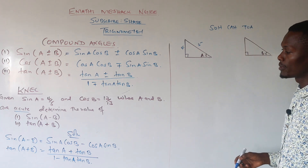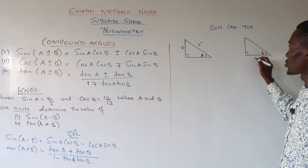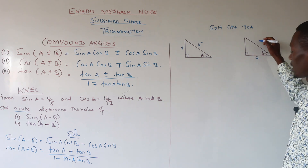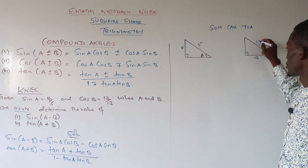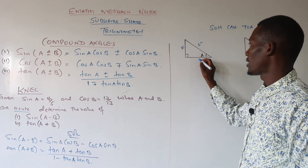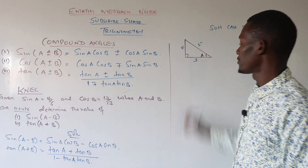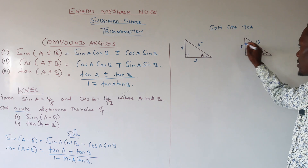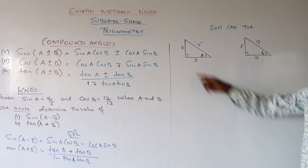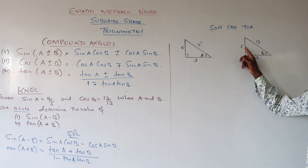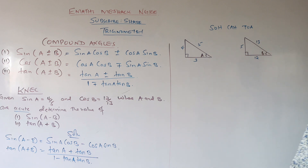For B, cosine of B is given by 12 over 13, so 12 is our adjacent and 13 is our hypotenuse. The missing side is 5, using Pythagoras: 4 squared plus 3 squared equals 5 squared. Similarly, for the second triangle, the missing value is 5.